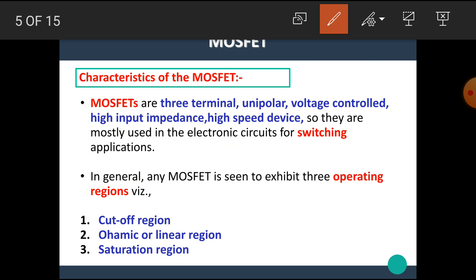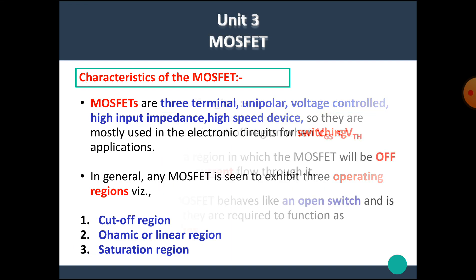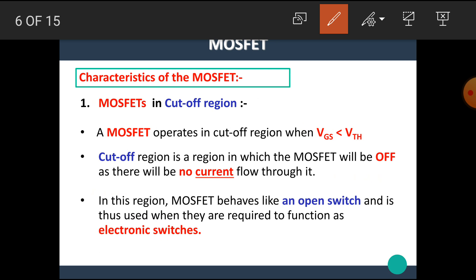In the previous video, we also saw the characteristics of the MOSFET. MOSFETs are three-terminal, unipolar, voltage-controlled, high-input impedance, high-speed devices, so they are mostly used in electronic circuits for switching applications. In general, any MOSFET exhibits three operating regions: the cut-off region, the ohmic or linear region, and the saturation region. Depending upon the region, the MOSFET works as an open switch, closed switch, or as an amplifier.